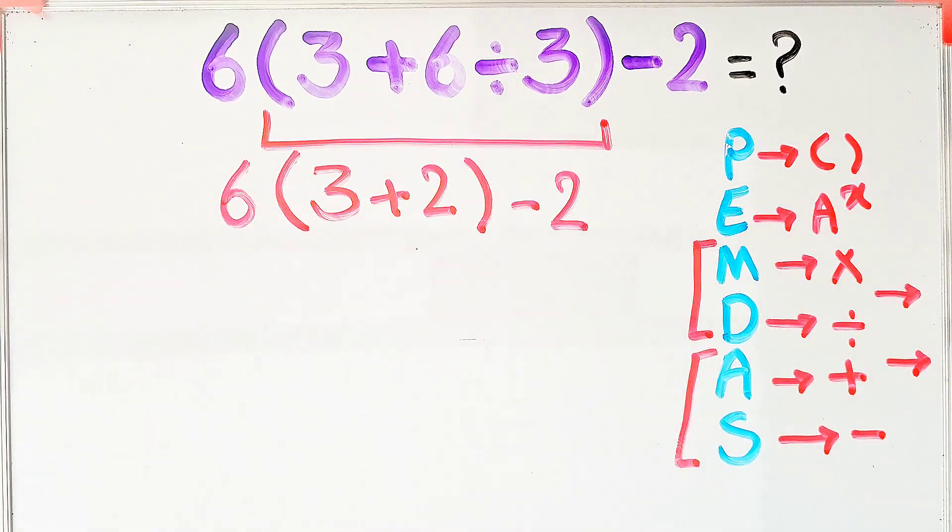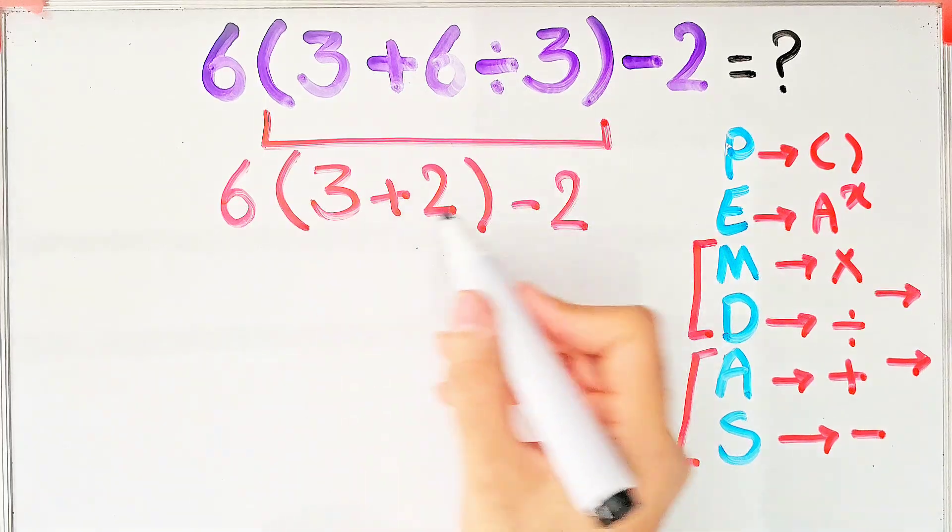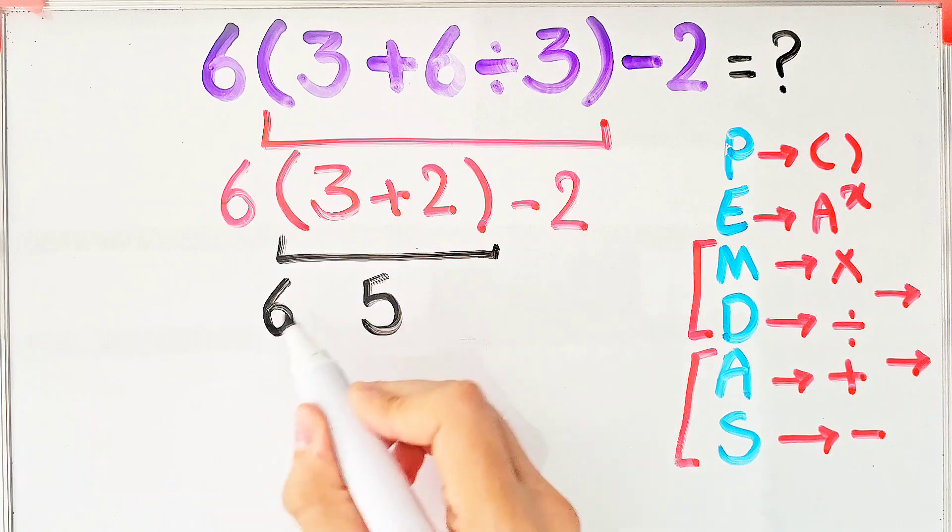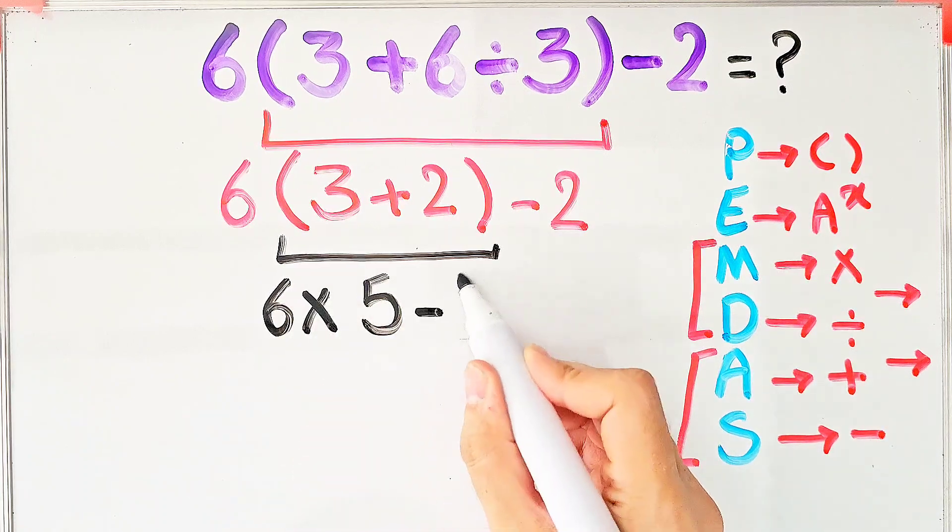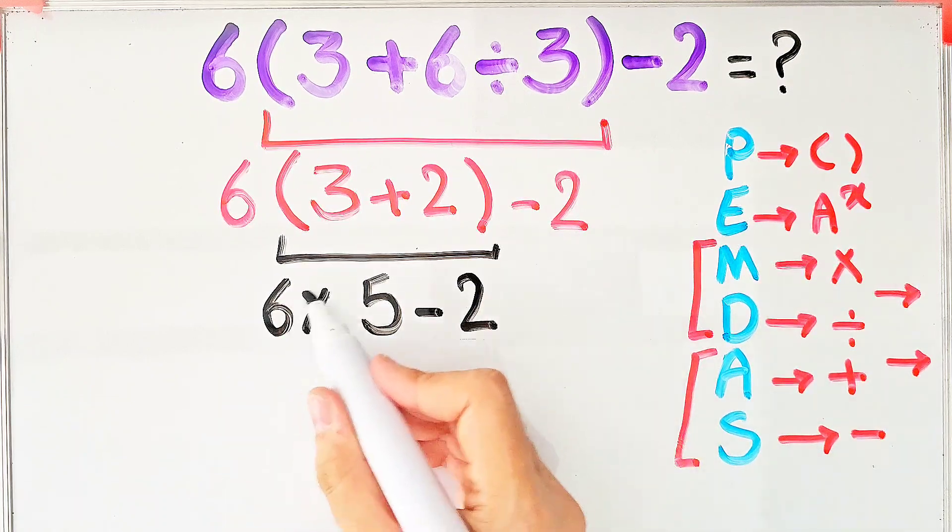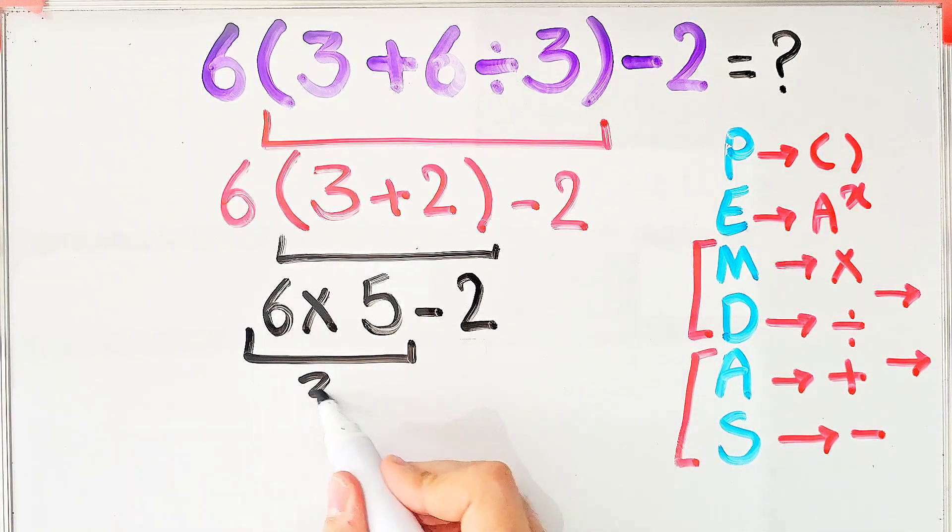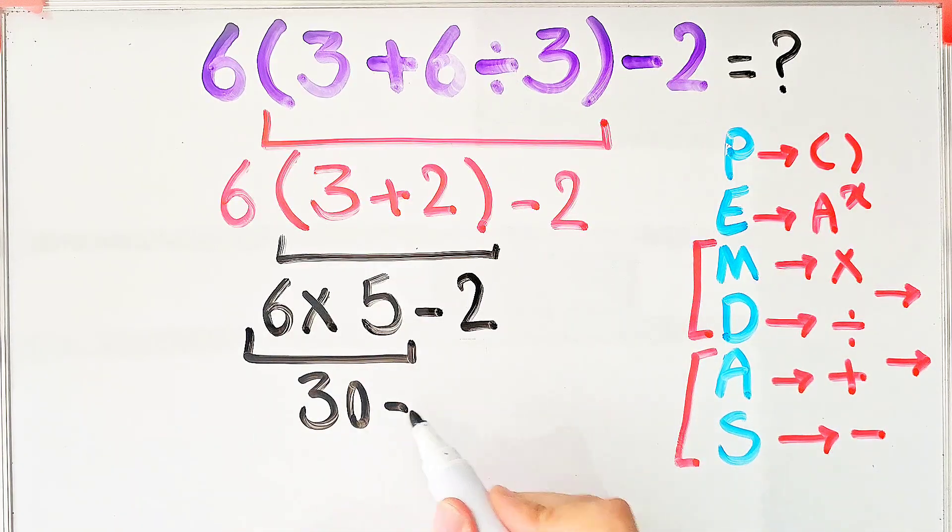Again, we simplify the parenthesis. 3 plus 2 equals 5. Now we have 6 times 5 then minus 2. In this step, we do this multiplication because multiplication has higher priority than subtraction. 6 times 5 equals 30. And 30 minus 2 equals 28.